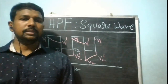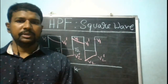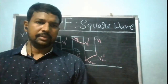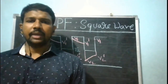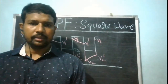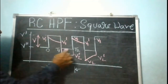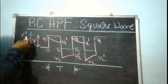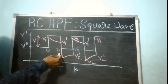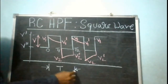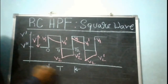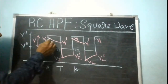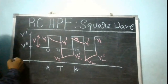Let us consider the response of an RC high pass filter circuit when the input is a square wave. Before we write mathematical equations, let us have a qualitative understanding of how the output waveform is going to look. The white colored curve represents a square wave whose minimum value is V'' and maximum value is V', and the output is represented with an orange colored curve.